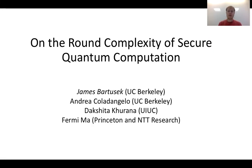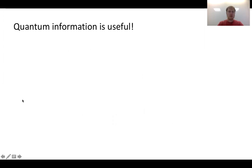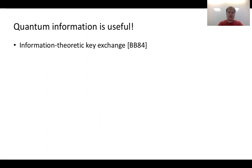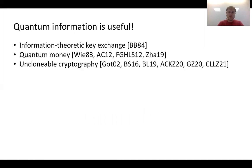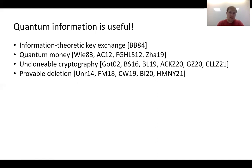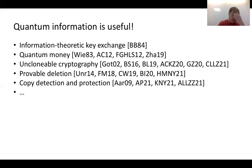I'll be talking about the round complexity of secure quantum computation. This is joint work with Andrea, Dakshita, and Fermi. Quantum information is pretty useful for cryptography — probably the most famous example is information-theoretic key exchange, but there are many other examples including quantum money, unclonable currency, other types of unclonable cryptography like encryption or signature schemes with unclonable keys, and provable deletion of information.